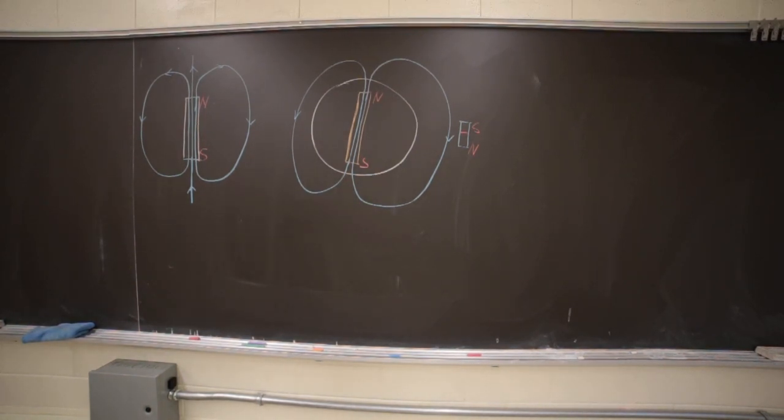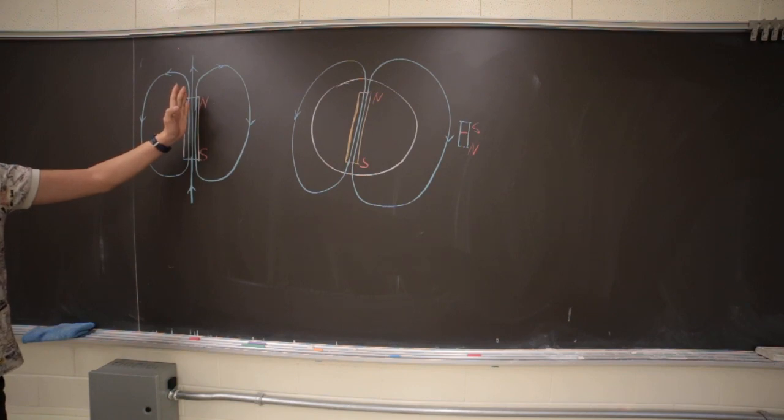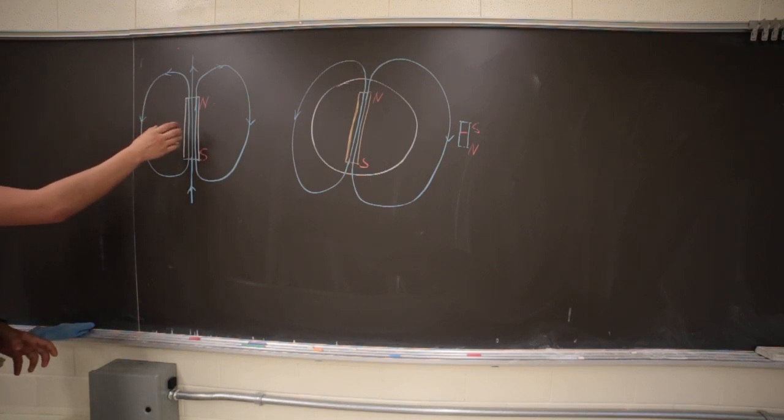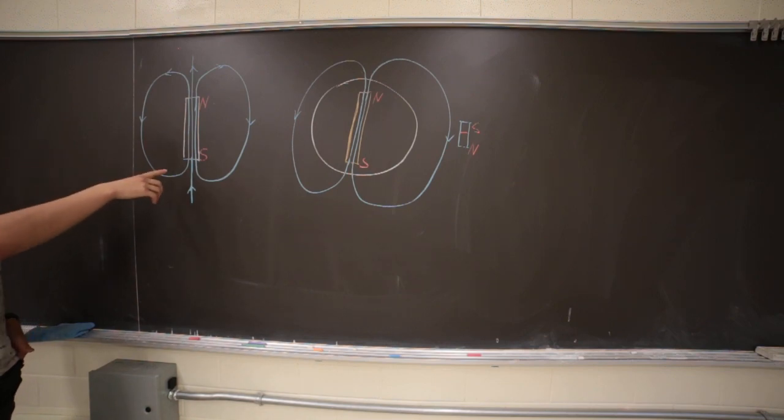So let's talk about bar magnets. Here is a bar magnet. The magnetic field lines will go through the magnet. Remember that because it's quite important that the magnetic field is a closed loop. Always a closed loop.